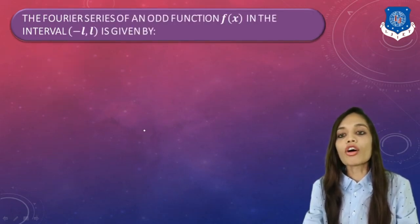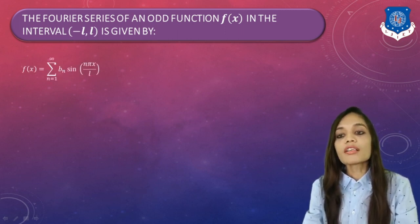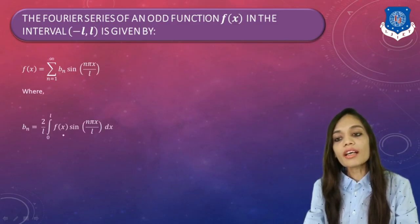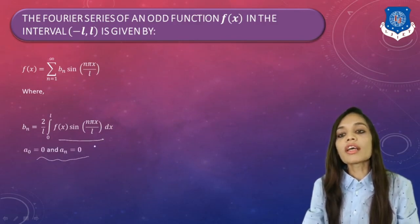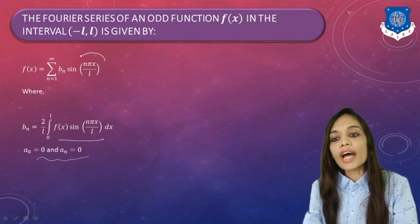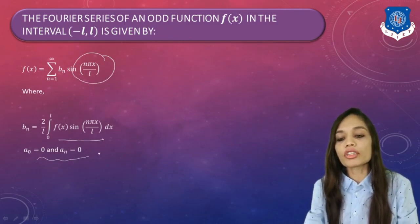Next, let us learn the formula for the Fourier series of an odd function f(x) on the symmetric interval (-L, L). The Fourier series is given by Σ Bn·sin(nπx/L), where Bn = (2/L)∫₀ᴸ f(x)sin(nπx/L)dx, and A0 and An = 0. So remember: for an even function Bn = 0, and for an odd function A0 and An = 0.